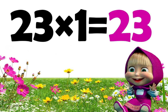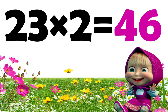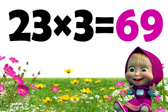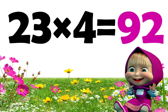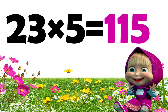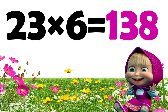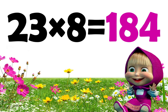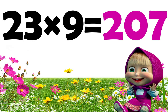23 ones are 23, 23 twos are 46, 23 threes are 69, 23 fours are 92, 23 fives are 115, 23 sixes are 138, 23 sevens are 161, 23 eights are 184, 23 nines are 207, 23 tens are 230.